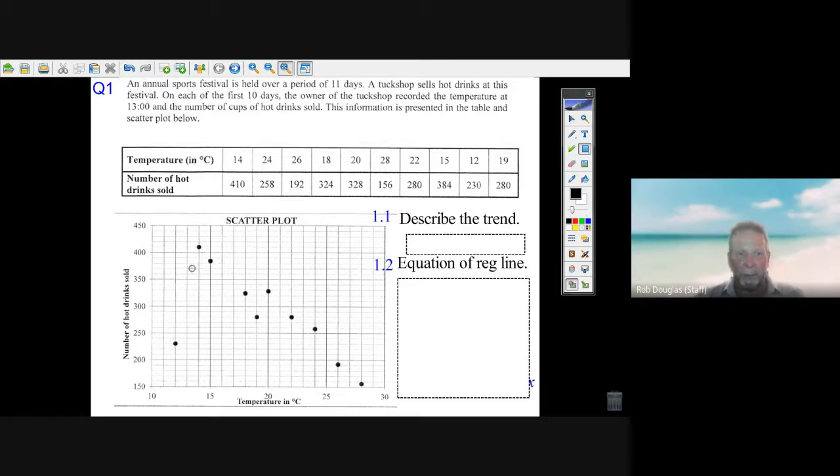As the temperature increases, the number of drinks sold goes down. There's a name for that. They ask what is the trend for one mark, and the answer is it's a negative correlation. It's a strong correlation too, but that's definitely the answer - negative correlation.